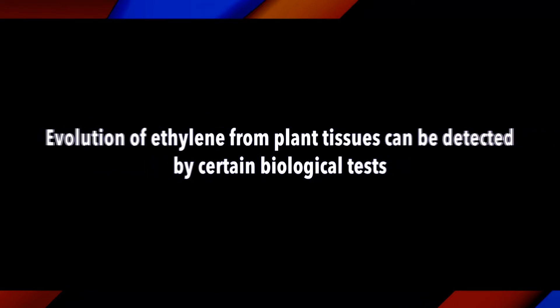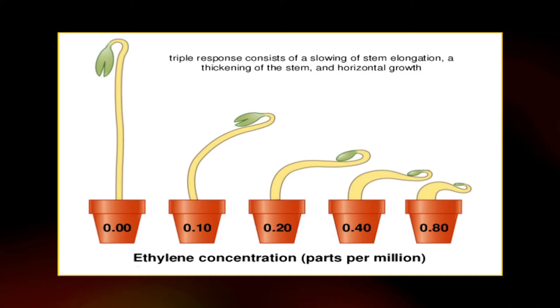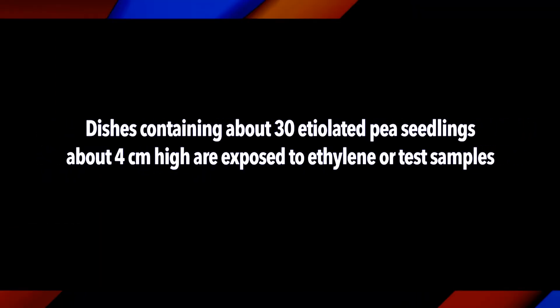The evolution of ethylene from plant tissues can be detected by certain biological testers. Those most frequently used have been the triple response of etiolated legume seedlings and the epinastic response of tomato and potato leaves. When intact etiolated pea seedlings are exposed to low concentrations of ethylene, the epicotyls show increased growth in thickness, reduced rate of longitudinal growth, and increased horizontal growth. This so-called triple response varies with the concentration of ethylene, giving well-defined quantitative and qualitative responses, and has been used by Rohbagh, Pratt, and Biale for the measurement of small concentrations of ethylene. Dishes containing about 30 etiolated pea seedlings about 4 cm high are exposed to ethylene or test samples.